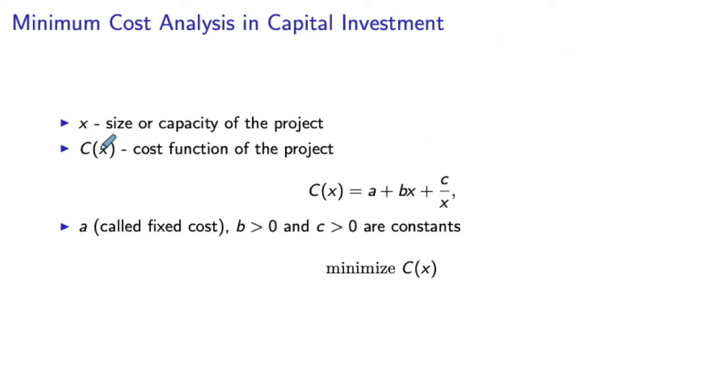Assume we want to invest in a certain project and we need to decide on the capacity of this project. Think about opening a manufacturing facility. There is a fixed cost associated with opening the facility, and then there is a variable cost that depends on the size of the project.